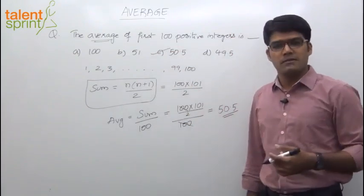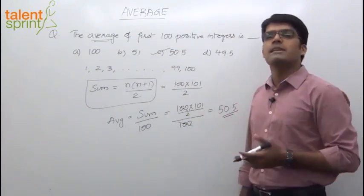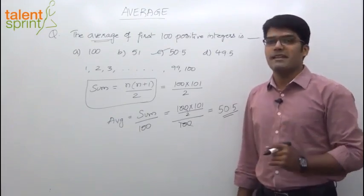So very simple one. Sum of all the values by number of values. Sum should be taken as n into n plus 1 by 2, which is the sum of first n natural numbers.